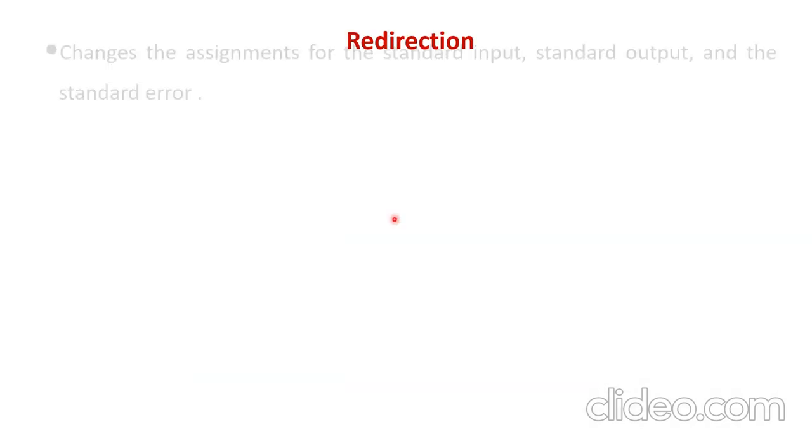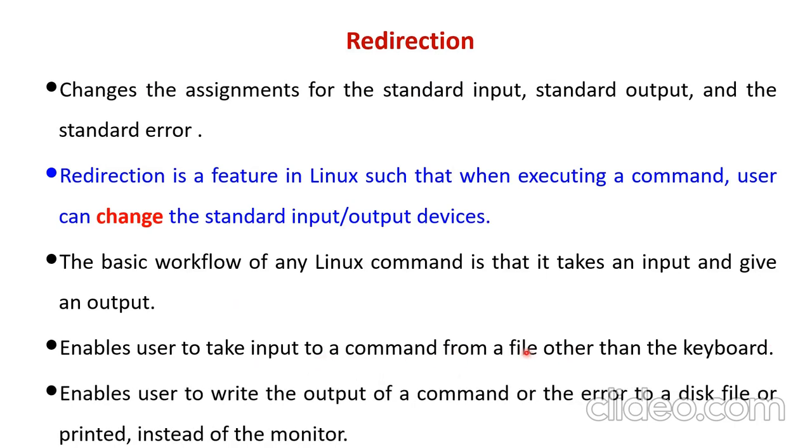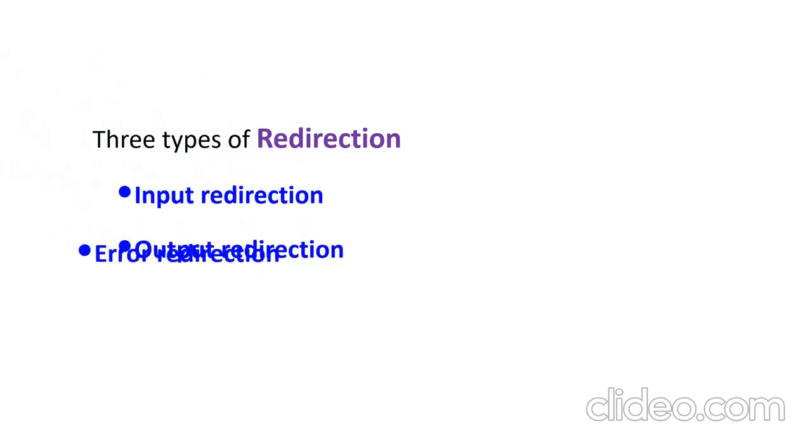So that is, you are going to change the assignment. Instead of taking input from the keyboard, you are going to take input from the file. Instead of writing output to a monitor, you are going to write to a file or to the printer. Redirection can be set. One is called input redirection. Second, output redirection. And third, one is called error redirection.